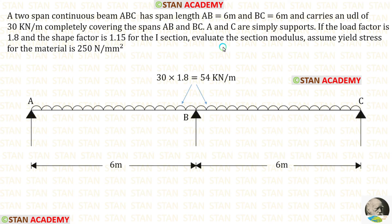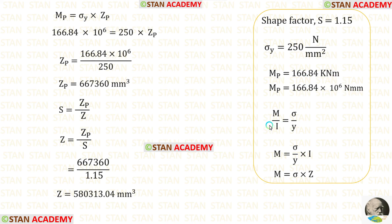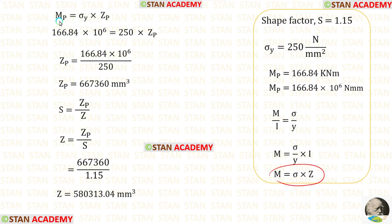In the question we have been asked to find the section modulus. The shape factor and yield stress are given, and using these values we can find the section modulus. We convert MB from kNm to N·mm by multiplying by 10⁶. Using the relationship M/I = σ/Y, we get I/Y = Z (section modulus). Therefore, the plastic moment MB equals yield stress times plastic modulus Zp.